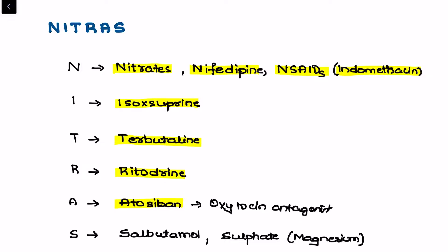All these three, as well as salbutamol, belong to beta-2 adrenergic receptor agonists. S stands for salbutamol and sulfate is magnesium sulfate.